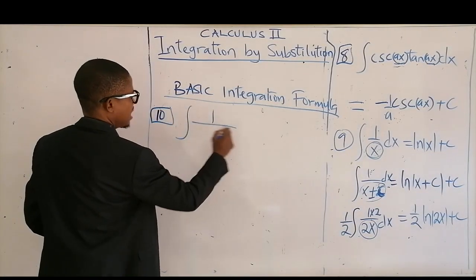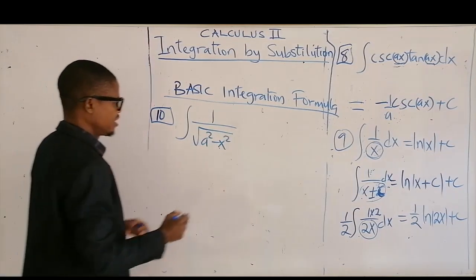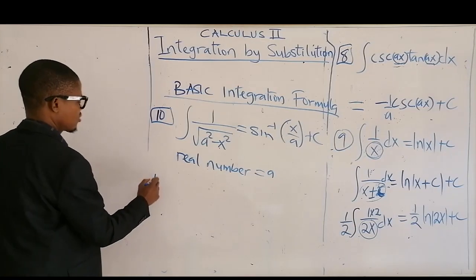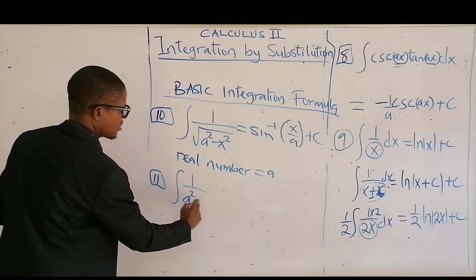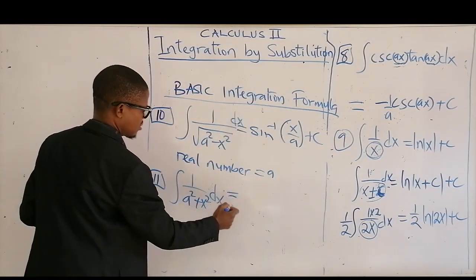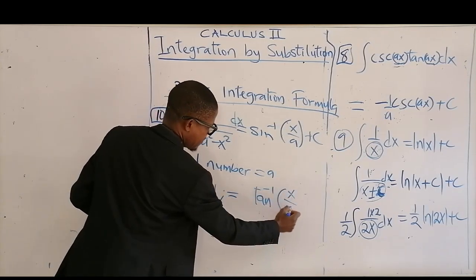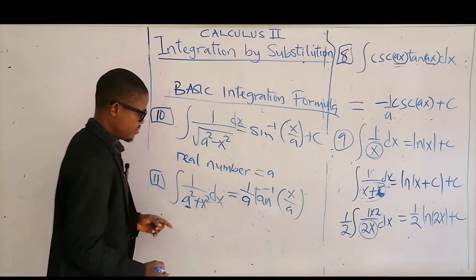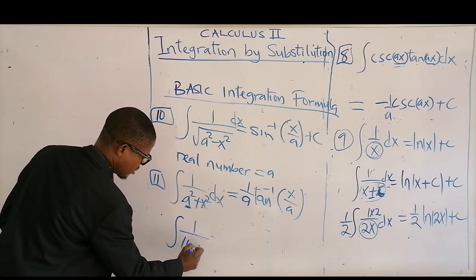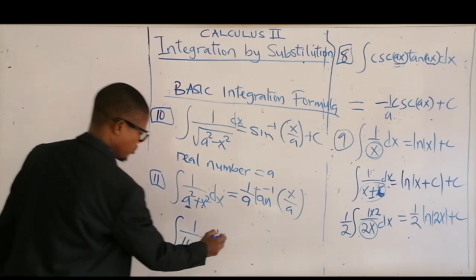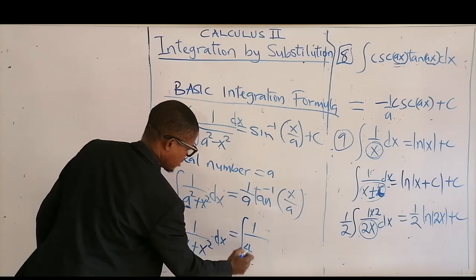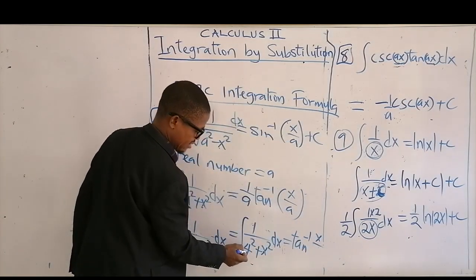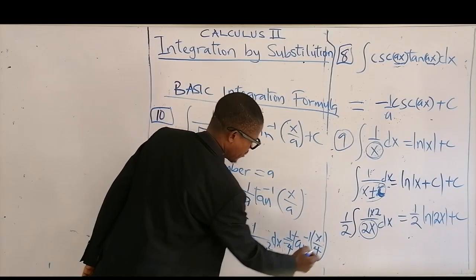The next basic formula is the integral of 1 over the square root of (a² minus x²) dx. This gives you arcsin(x/a) plus c, where a is a real number. Then the next one is the integral of 1 over (a² plus x²) dx, which gives you 1 over a times arctan(x/a) plus c. For example, the integral of 1 over (16 plus x²) dx equals 1 over a times arctan(x/a), where a is 4, giving 1 over 4 times arctan(x/4) plus c.